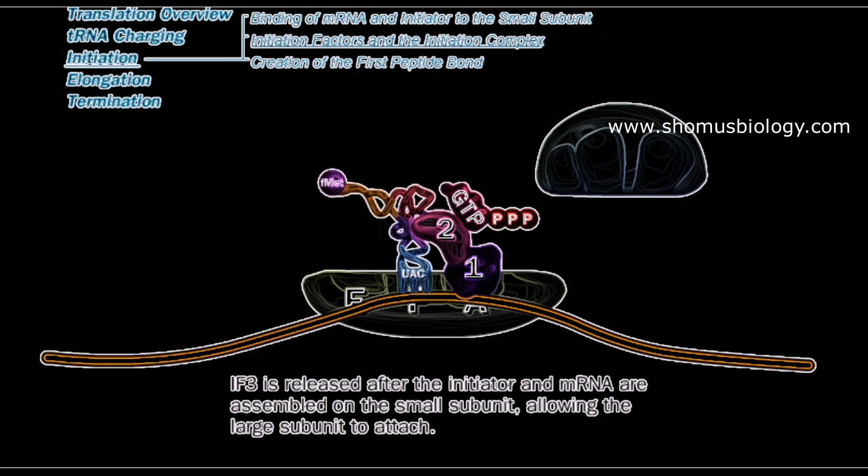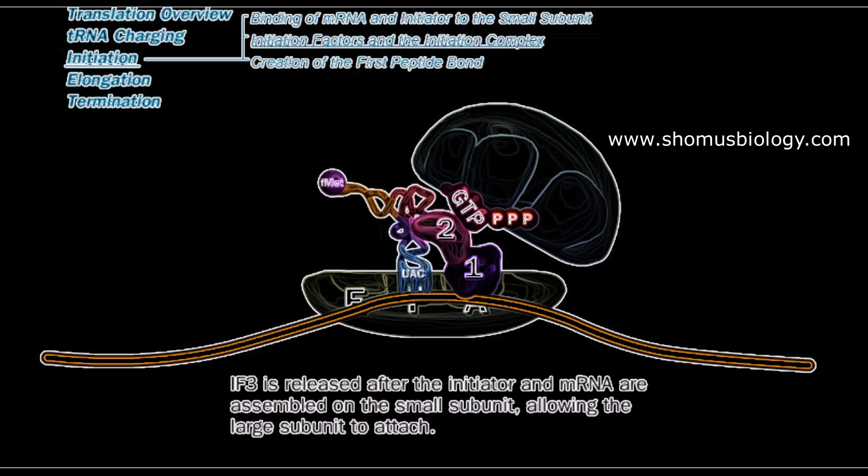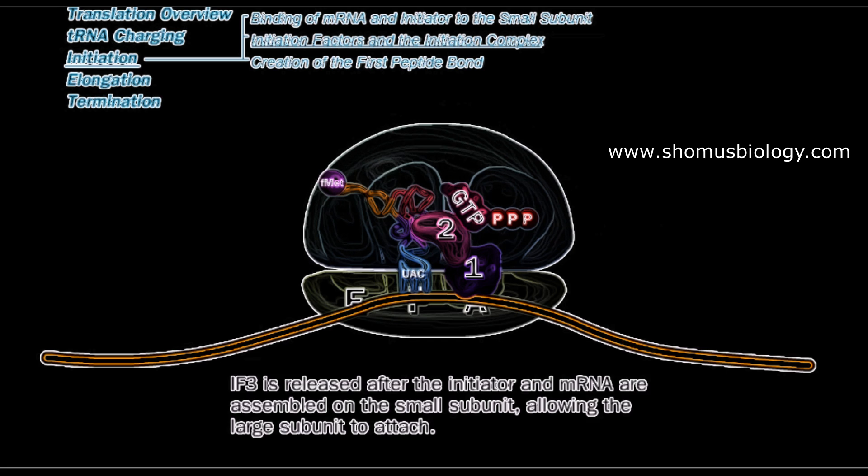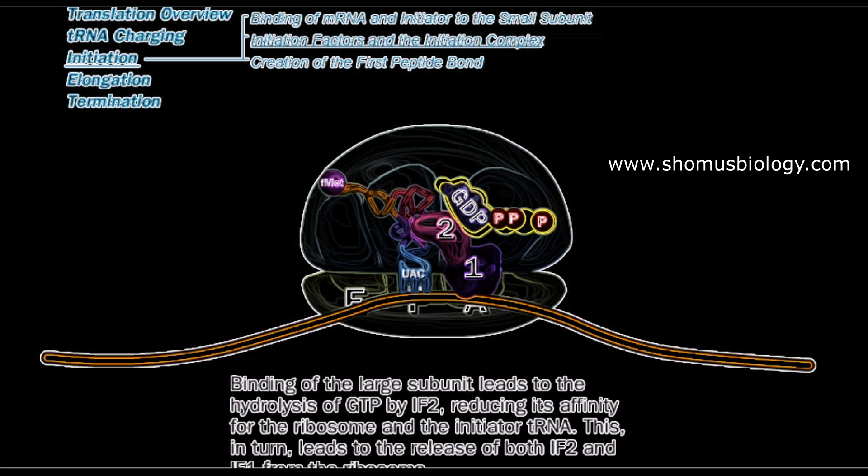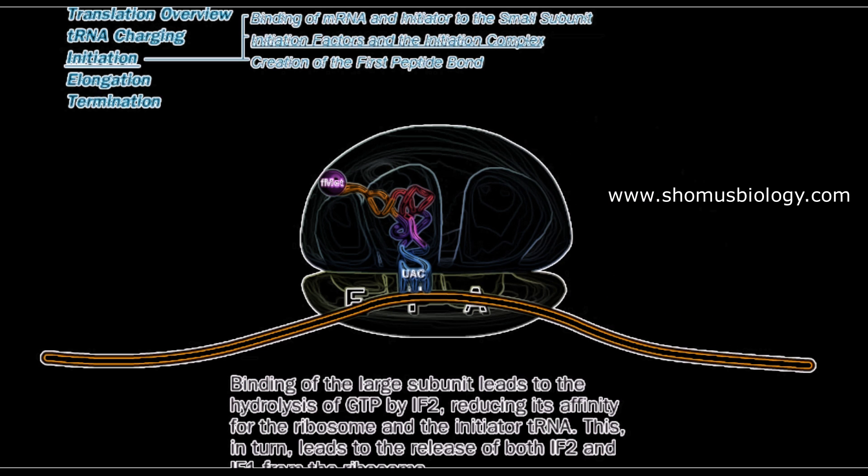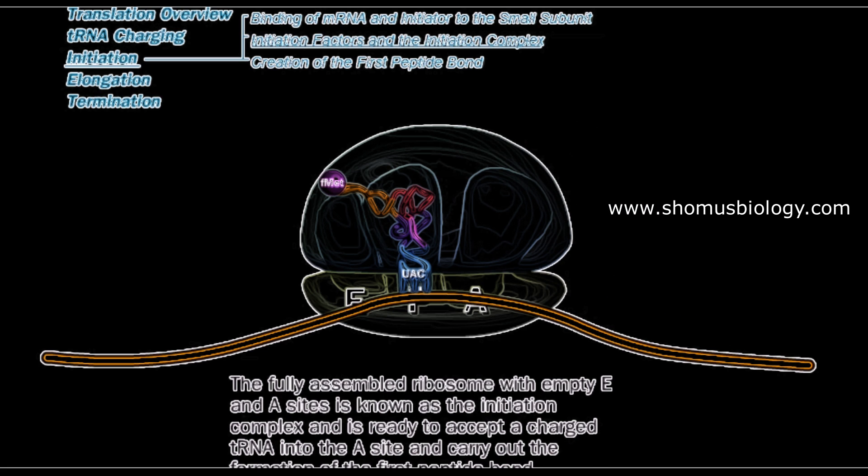Once IF3 releases, now the large subunit can interact to the small subunit because IF3 is cleaved. So now large and small subunit associate together, forming the complete translation initiation complex. IF2 hydrolyzes GTP into GDP, and IF2 and IF1 both are released from the A site. So now E site and A site both are free, and formylated tRNA-carrying amino acid is present in the P site.